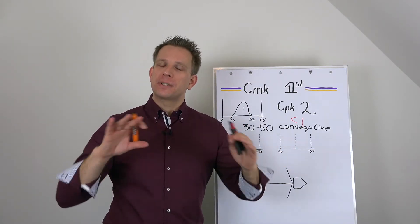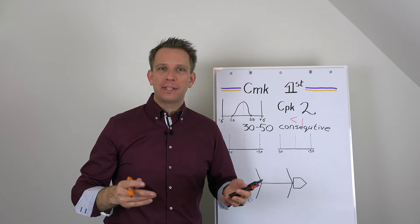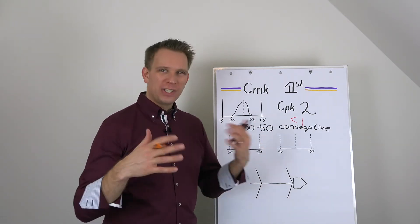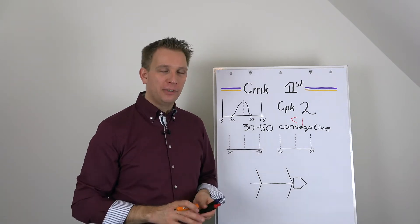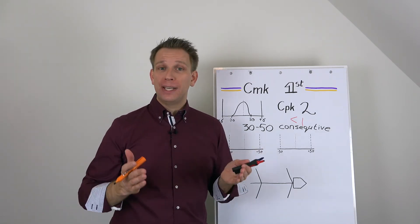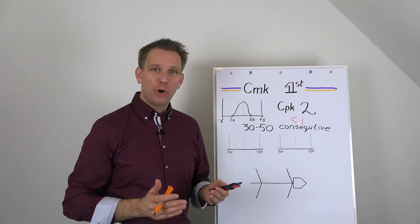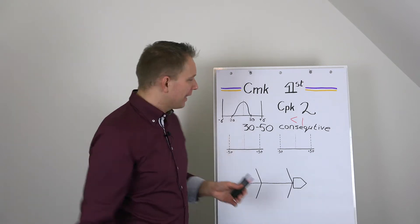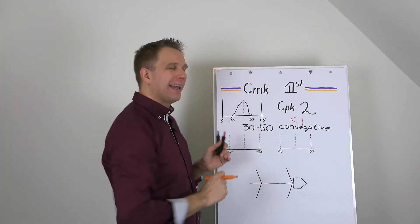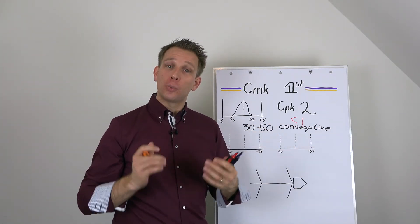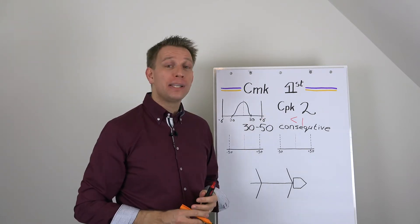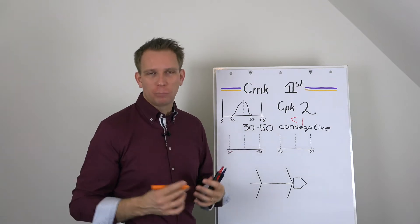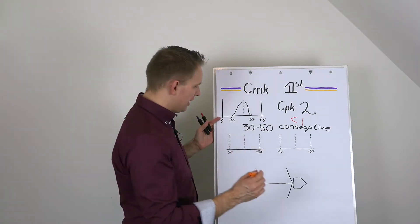30 to 50 consecutive samples. Why? Because this eliminates the random factors around your process. So there is no switching of dies, there is no different material. This is what your machine in normal operating settings can do. You could say at its best. And this actually is the basis on which we calculate the machine capability, CMK. And from this you will get several scenarios, but basically one of two scenarios.